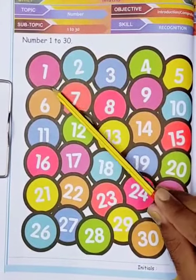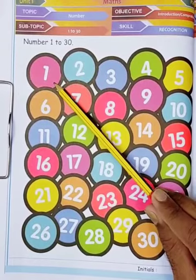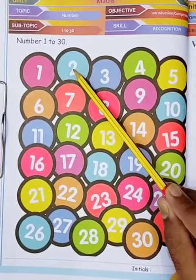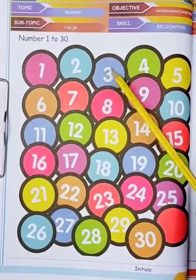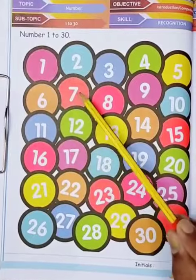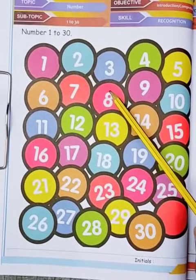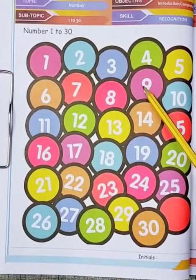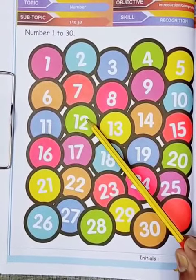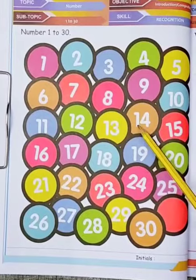Say the numbers after me: one, two, three, four, five, six, seven, eight, nine, ten, eleven, twelve, thirteen, fourteen.